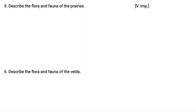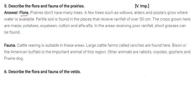Describe the flora and fauna of the prairies. Flora: prairies don't have many trees. Few trees like willows, alder, and poplar grow here. Fertile soil is found in places that receive rainfall of over 50 centimetres. The crops grown here are maize, potatoes, soya bean, cotton, and alfalfa. In areas receiving poor rainfall, short grasses can be found.